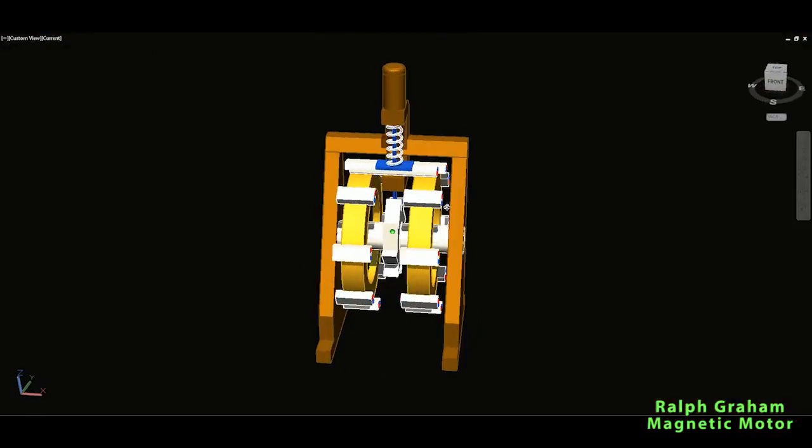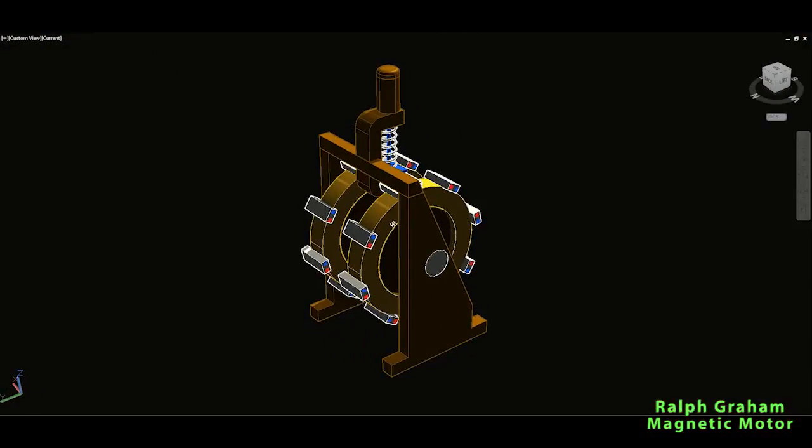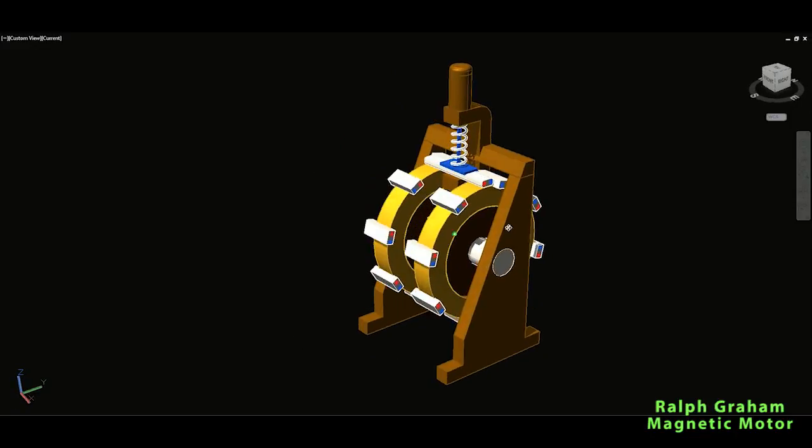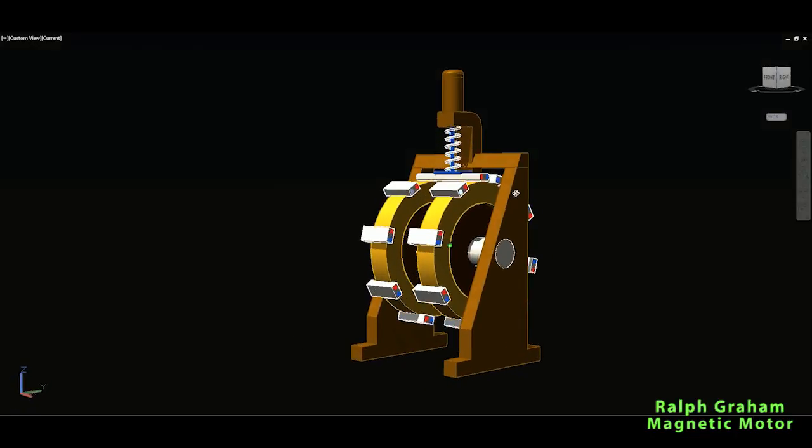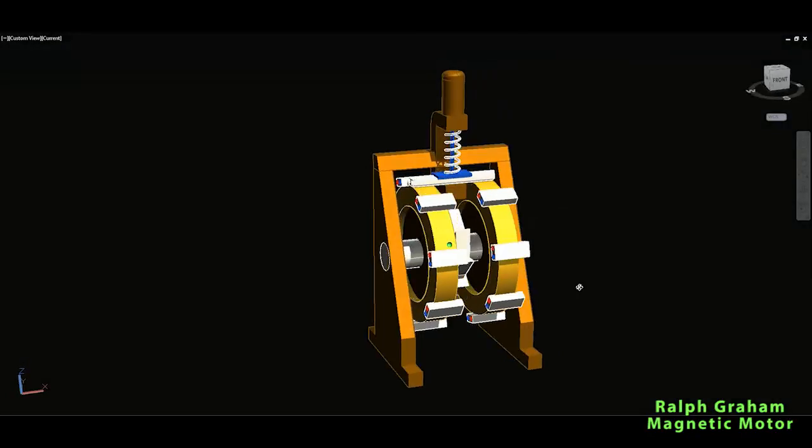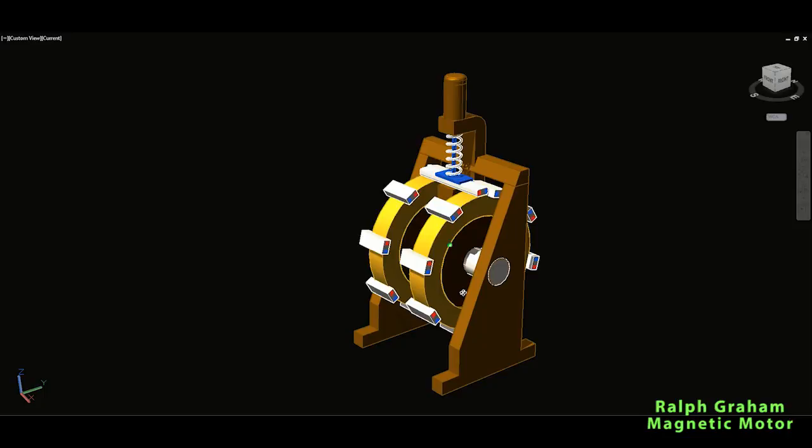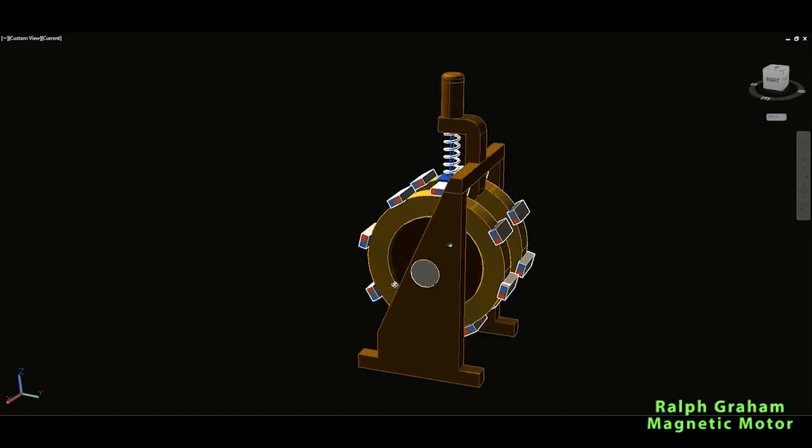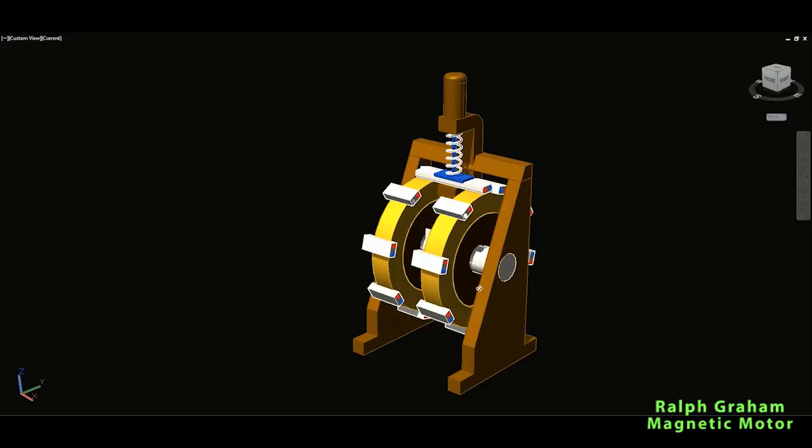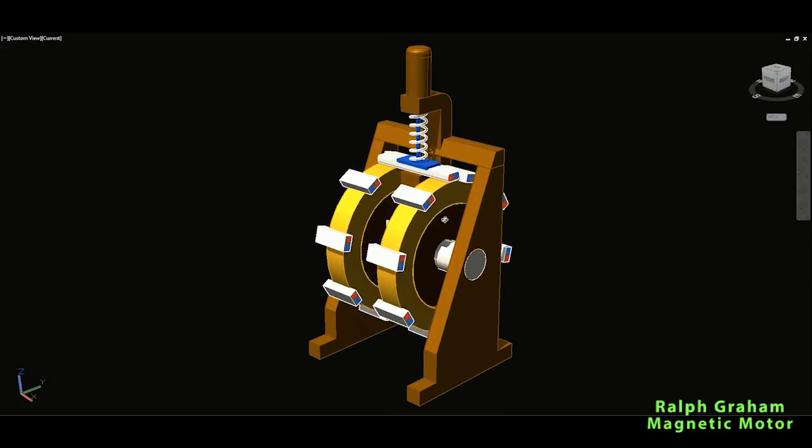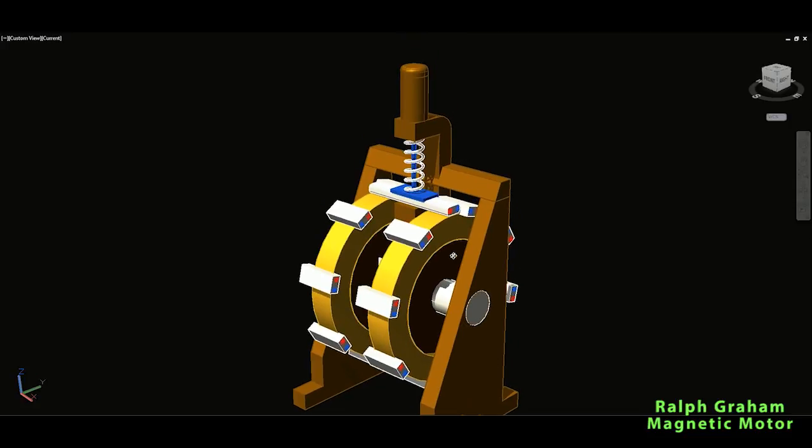Okay, so this is the Ralph Graham magnetic motor. Look at this, it looks really pretty. The designer, Ralph, did a really good job in designing this housing which holds the rotor and stator magnet. Let me try to describe components one by one. It's basically very simple, you'll see.